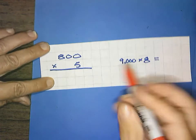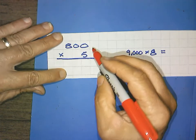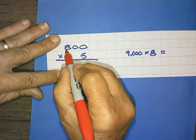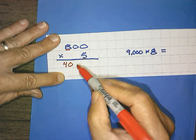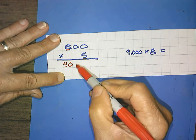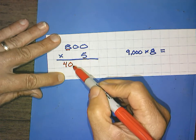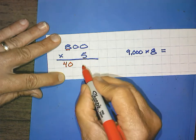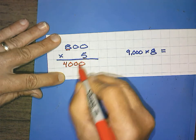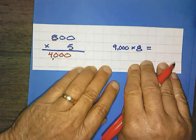800 times 5. 8 times 5 is 40. Oh, so do we only need one zero? I'm tricking you, right? It doesn't matter. We still have to count your zeros. 1, 2, and write 1, 2, so that would be 4,000. And finally,